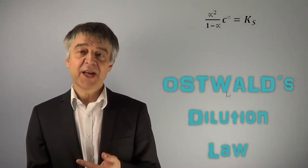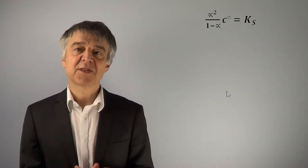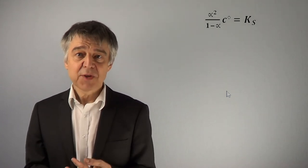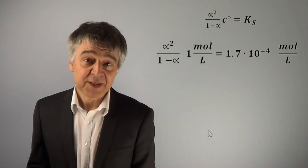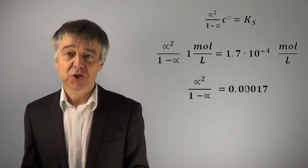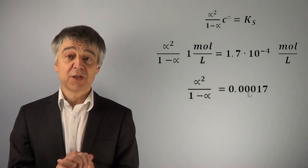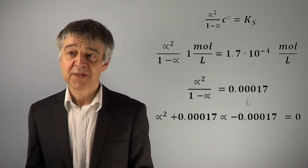According to Ostwald's dilution law, alpha squared over 1 minus alpha times C equals Ks. Substituting the numerical values and solving the quadratic equation for alpha, we obtain a degree of dissociation of 0.013, that is 1.3%.